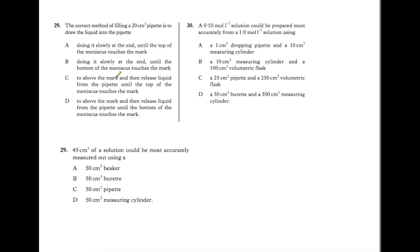To above the mark and then release the liquid from the pipette until the top of the meniscus touches the mark. Again, it's the bottom that we want. So the meniscus is the curve and you want the line to rest where the bottom of the meniscus is. You should draw the liquid above the mark and release the liquid from the pipette until the bottom touches the mark.